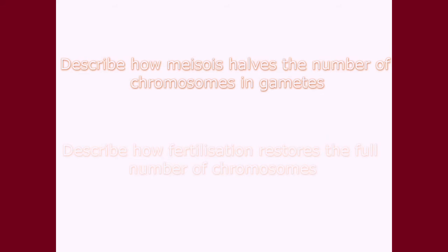In this video, we're going to take a look at how the process of meiosis works and how it forms gametes. By the end of this video, you should be able to describe how meiosis halves the number of chromosomes in gametes, and then describe how fertilization restores the full number of chromosomes.